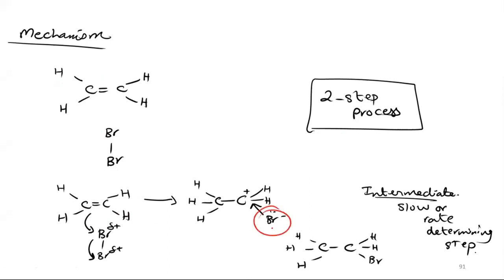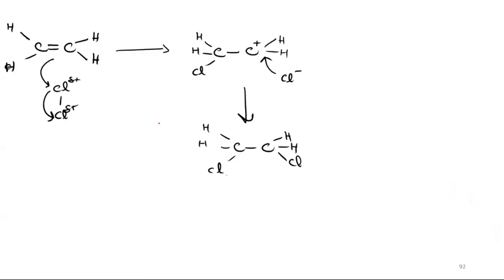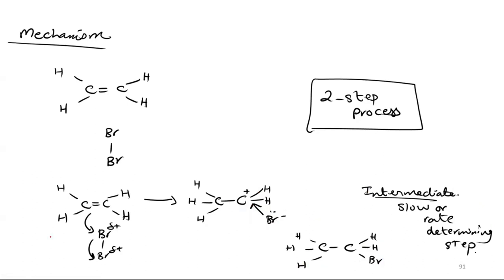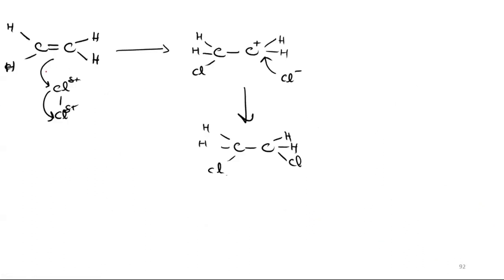It attacks on the carbon delta positive. You have C2H4 and Br2 forming an intermediate. This is the intermediate or slow or rate-determining step. After that, a product is formed. This is also a result of C2H4 reacting.